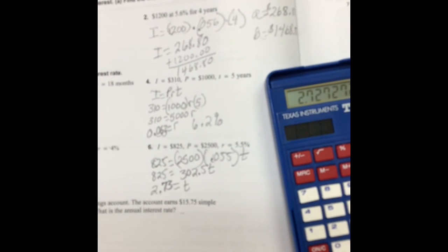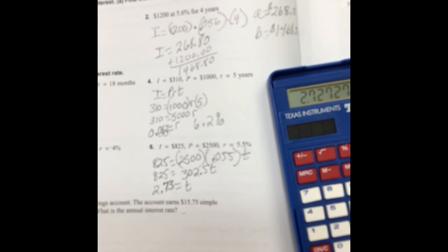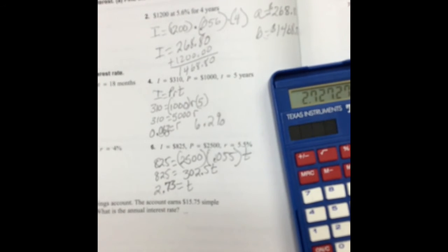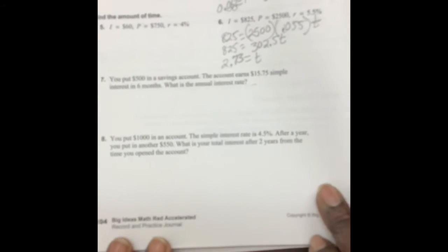All right, so 2.73 is our time. Let's go. So it's just over two years, almost three years. Let's move on to number 8.